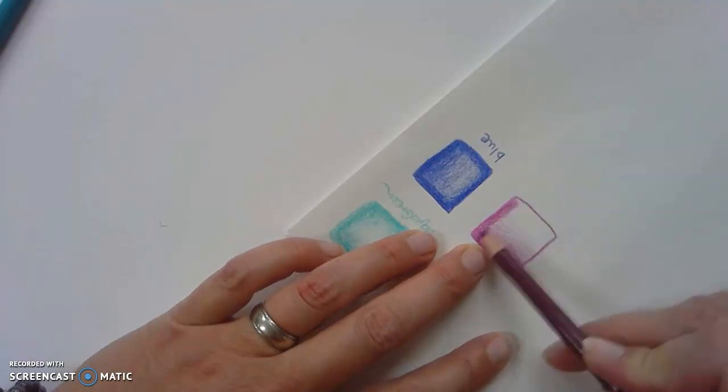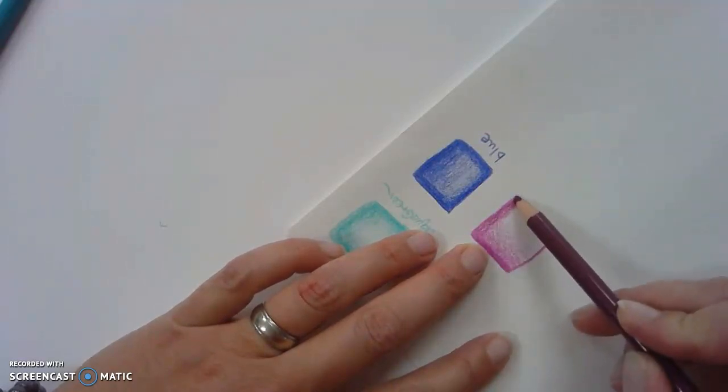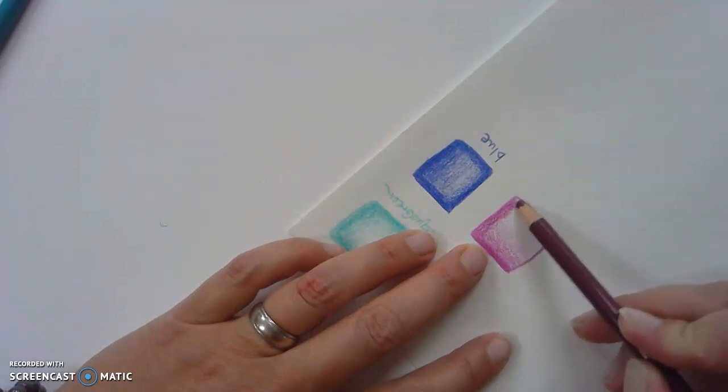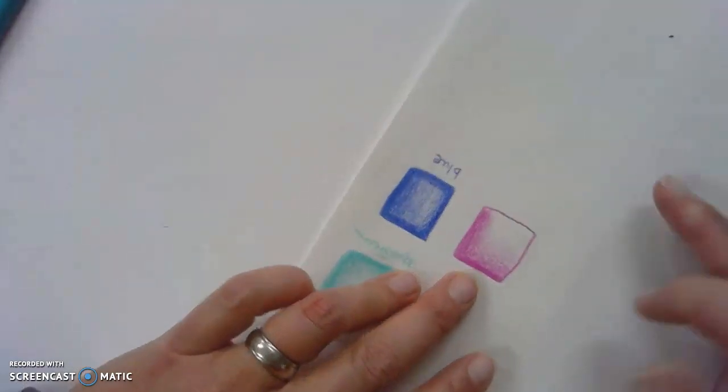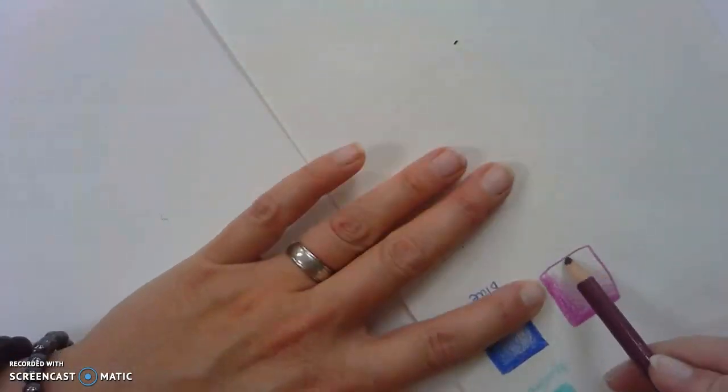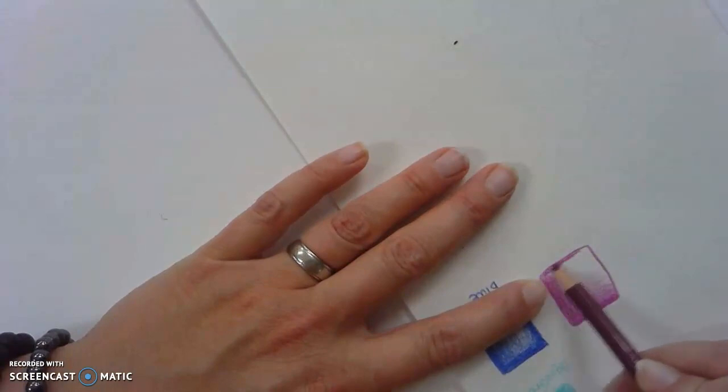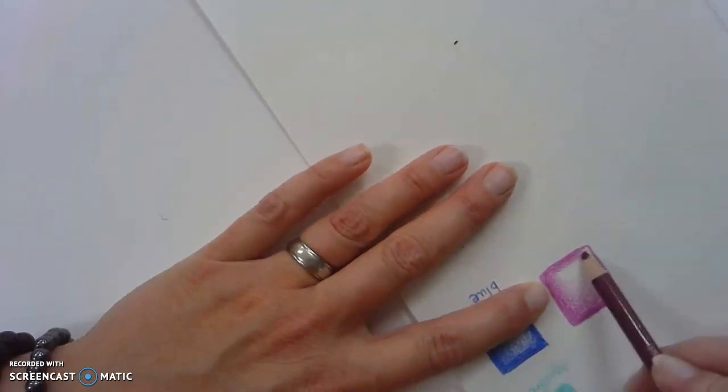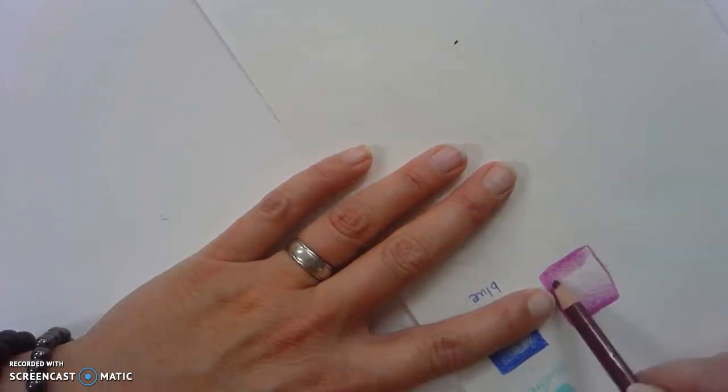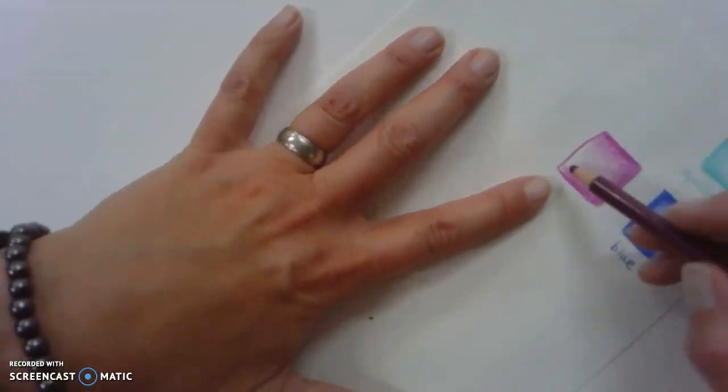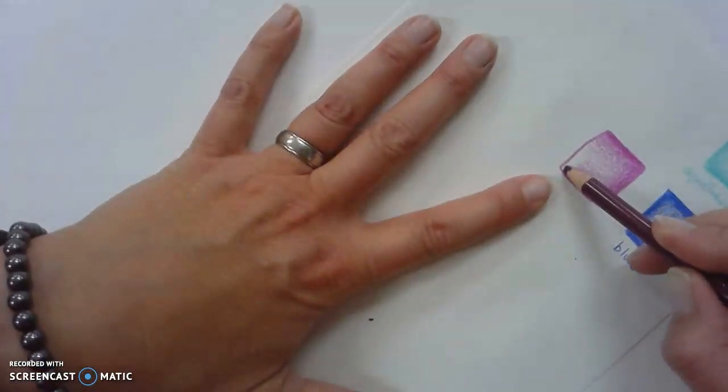I'm moving my pencil rather slowly across the page, making sure that I'm getting all that white space of the paper filled in. We're working on smooth transition on your value as you're laying the pencil down on your paper.